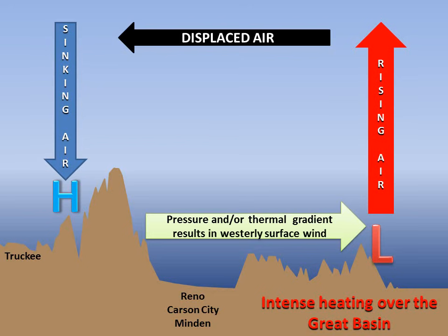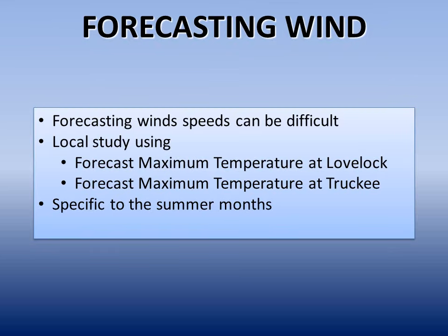Let's take a look at how this interaction between temperature differences and pressure differences creates the Zephyr wind. Determining how strong the wind will be can be difficult when forecasting for the Reno-Carson City area. A forecaster at National Weather Service Reno did some research and discovered a reliable relationship for forecasting winds at the Reno airport during the summer months, utilizing the forecast maximum temperatures between Truckee and Lovelock.